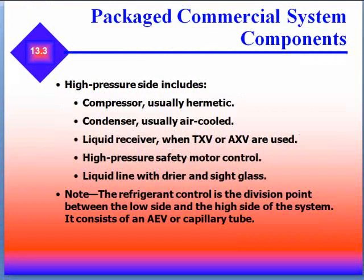The high pressure side includes compressors — usually hermetic — condensers that are air cooled, liquid receivers when a TXV or AXV is used, high pressure safety motor controls, and a liquid line with dryer and sight glass.